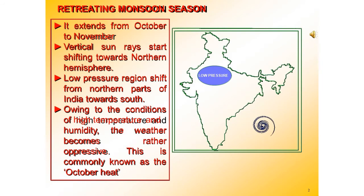This retreating monsoon period extends from October to November. Vertical sun rays start shifting towards the south, and the low pressure region shifts from the northern parts of India towards the south. Because of the high temperature and humidity, the weather becomes very oppressive — this is called October heat.